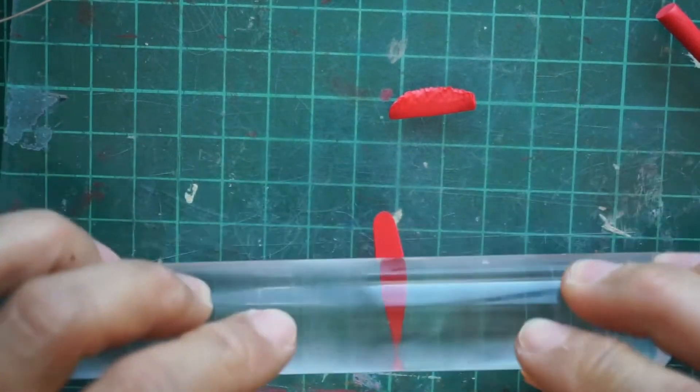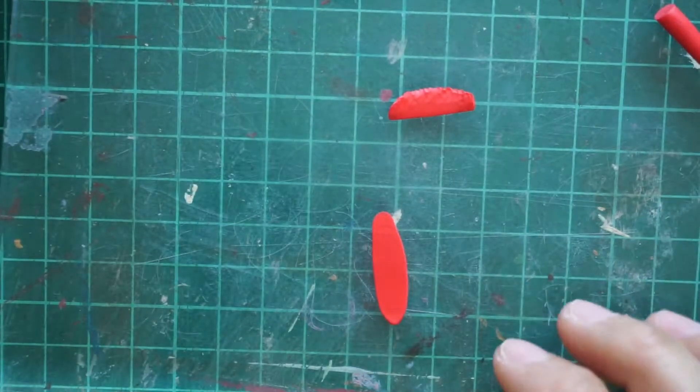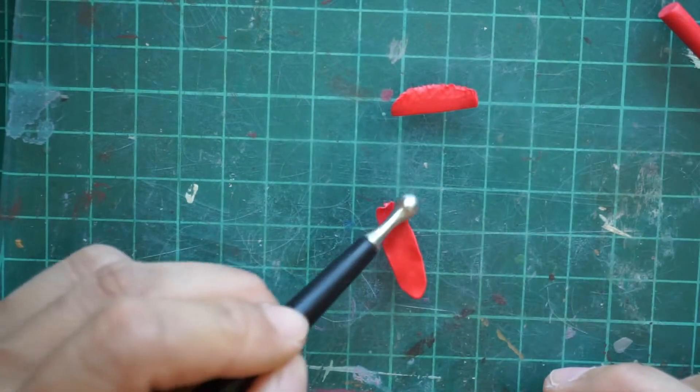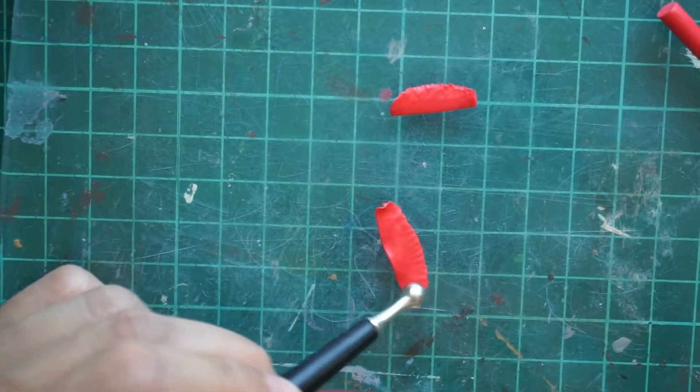Continue making the petals until you are satisfied with how the rose looks. In this project I use just three petals which are around 20 millimeters long.